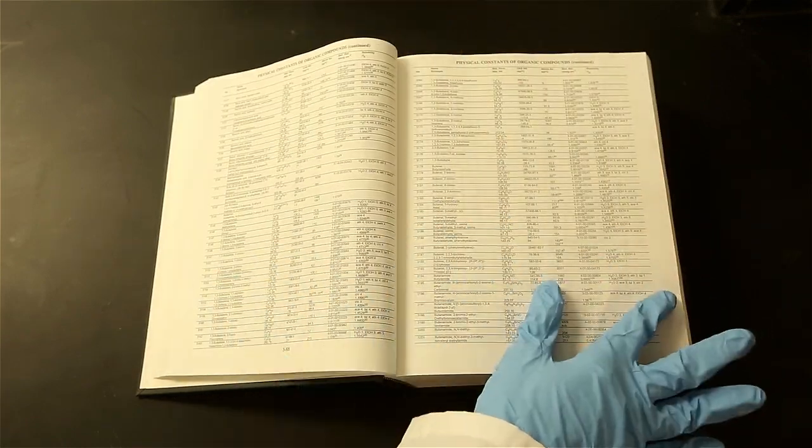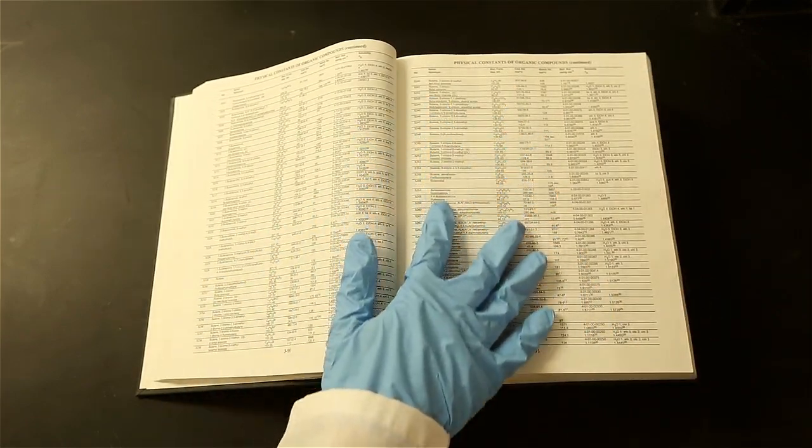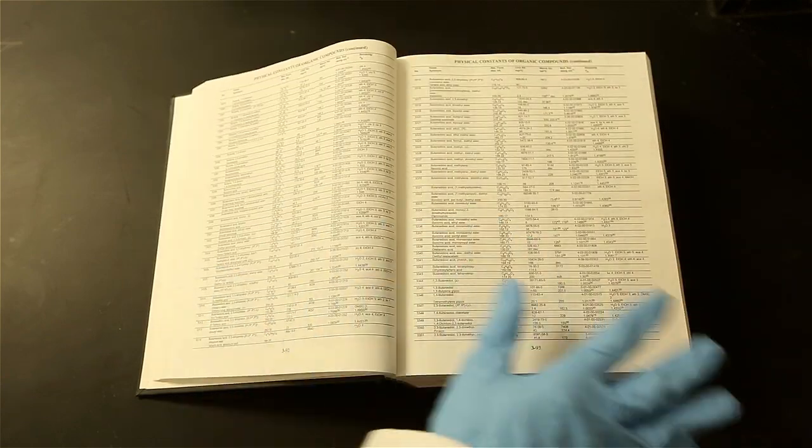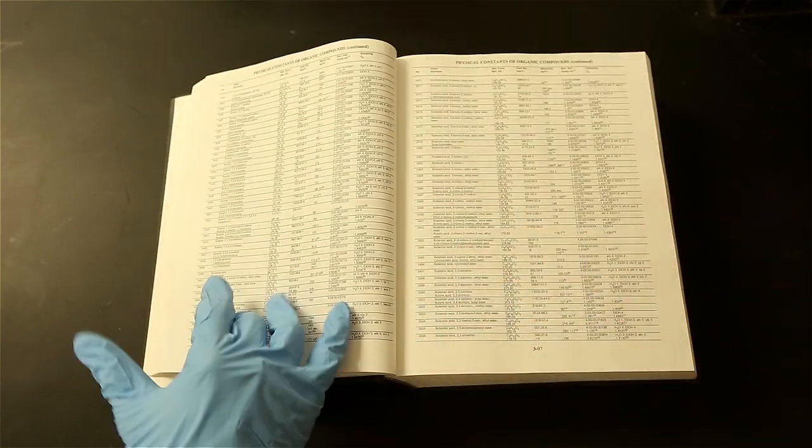Generally, a pure crystalline organic solid will have a melting point range of 1 degree. A depression or broad range serves as an indication that your sample is impure.